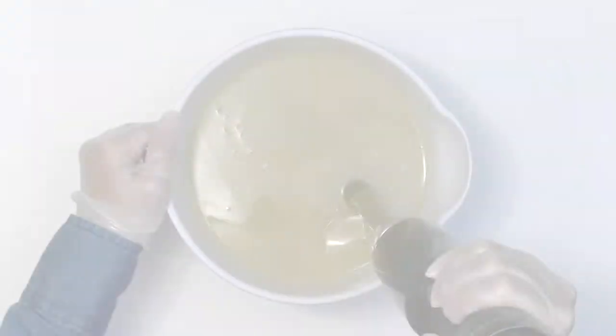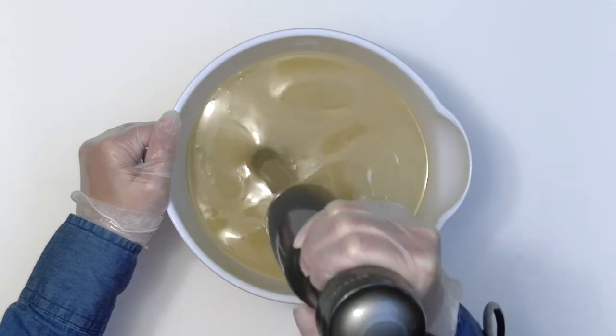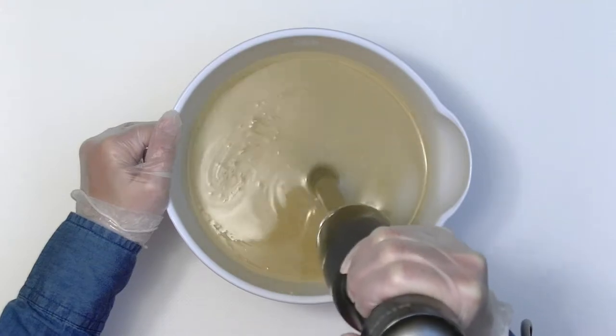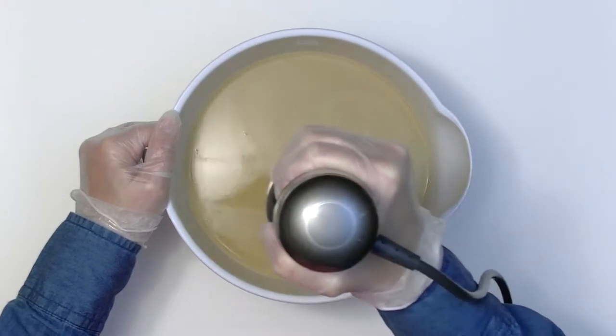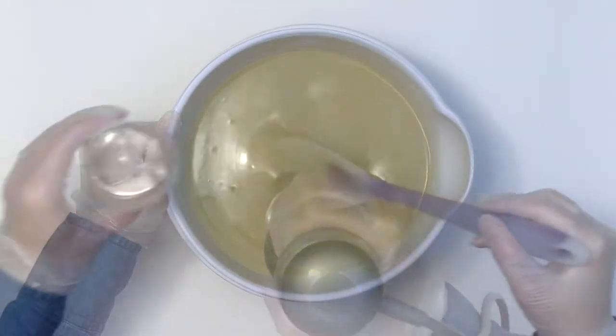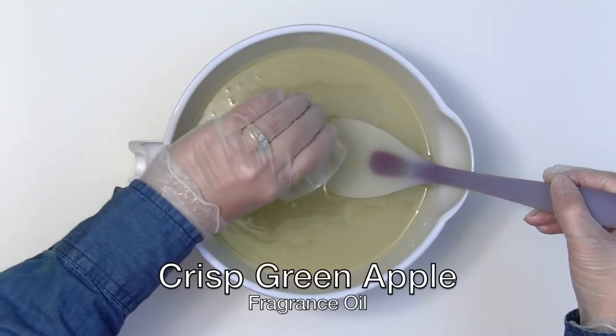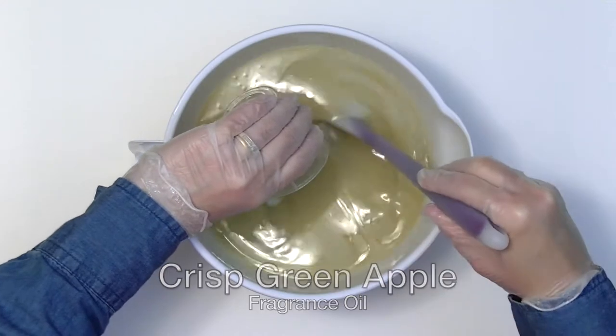Let's make soap. Here I've mixed the oils and lye water together and I stick blend until it reaches trace. I add the fragrance oil and stir. It smells exactly like the name—it's a juicy and crisp green apple scent.